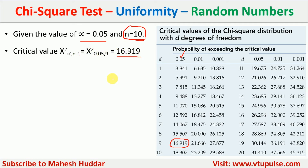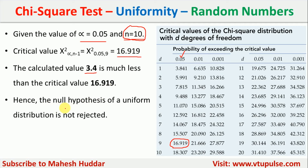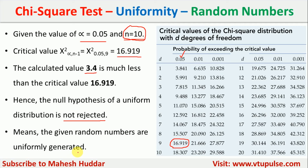Our calculated value of 3.4 is much less than the critical value of 16.919. Since the calculated value is well below the critical value, we can guarantee that the given random numbers are uniformly distributed. Therefore, the null hypothesis of uniform distribution cannot be rejected — the random numbers are uniformly generated and distributed.